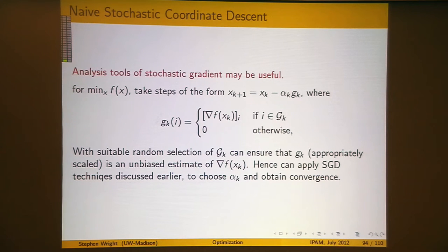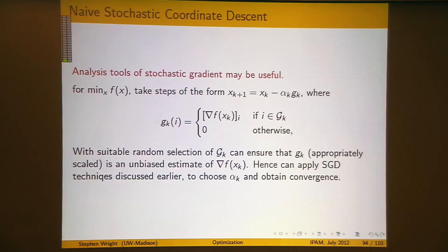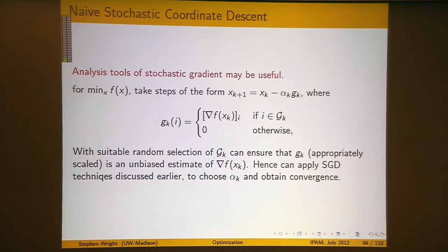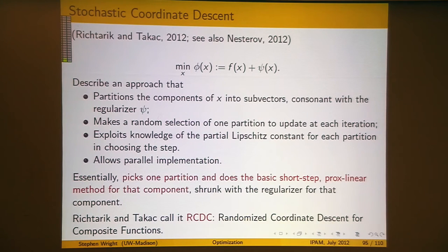You can define the step to be just the negative gradient in each component. You can imagine using the tools of stochastic gradient to analyze this approach — if the selection of gk is truly random, the overall vector you get, which is partly gradient elements and partly zeros, is in some sense an unbiased estimate of the full gradient. That's the essential ingredient needed to analyze stochastic gradient methods. So you could come up with a naive analysis of coordinate descent that just leverages those tools from stochastic gradient.